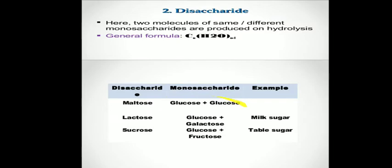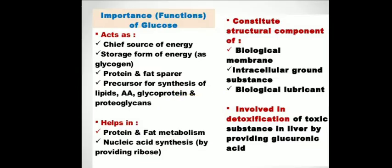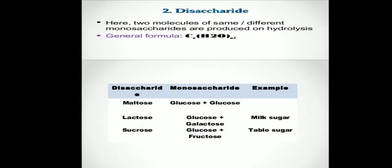That is glucose plus glucose. When two glucose molecules bind to each other with the help of a glycosidic bond, the new molecule which is formed is known as maltose.